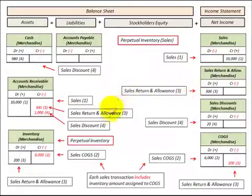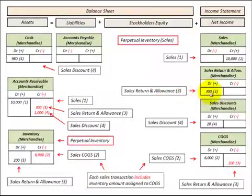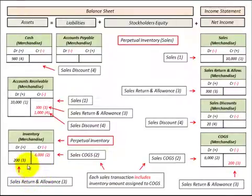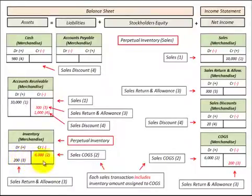Next we have a sales return and allowance. The gross amount of the value of that return would decrease accounts receivable — say it was $300 — and then we would increase sales returns and allowances for $300. This is a contra account that reduces sales. We also can't forget that on the sales return we had inventory returned, so we debit inventory to increase it by the percentage used against that sale — say $200 — and then reduce cost of goods sold for that $200 as well.